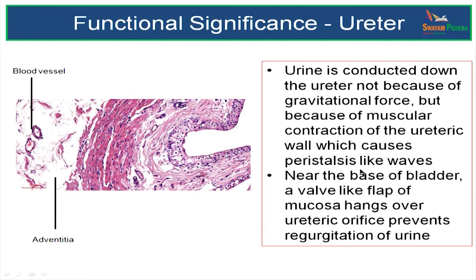This will produce a peristalsis-like wave. Also, near the base of the bladder a valve-like flap of mucosa is going to hang over the ureteric opening that will prevent regurgitation of urine from the bladder to the ureter.